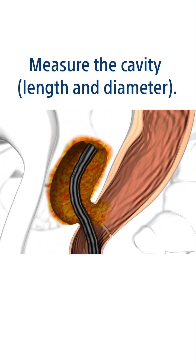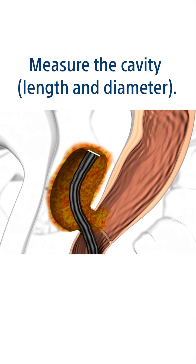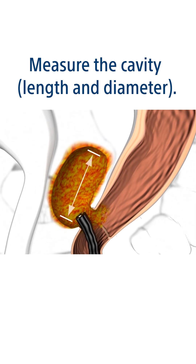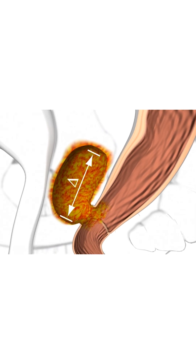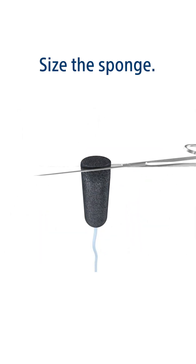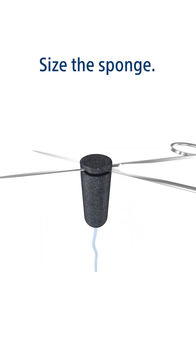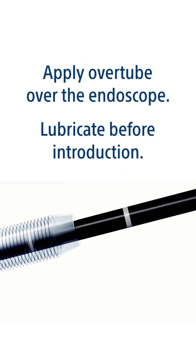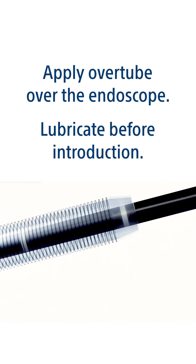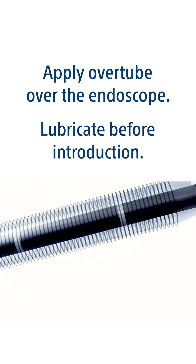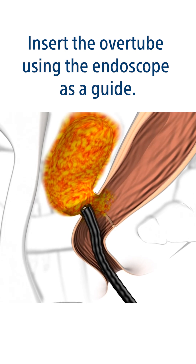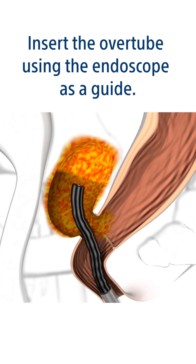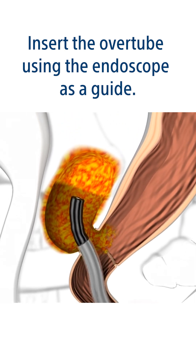Measure the cavity length and diameter, size the sponge, and apply the over tube over the endoscope. Lubricate before introduction, then insert the over tube using the endoscope as a guide.